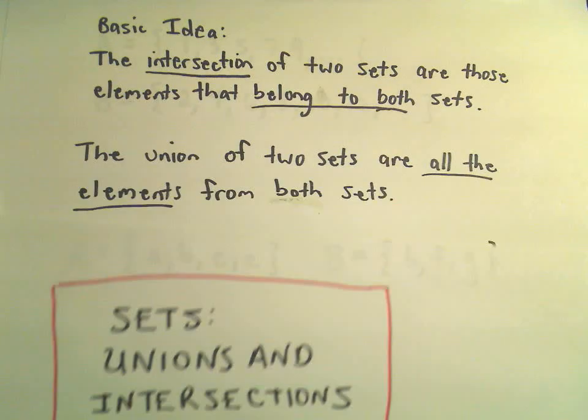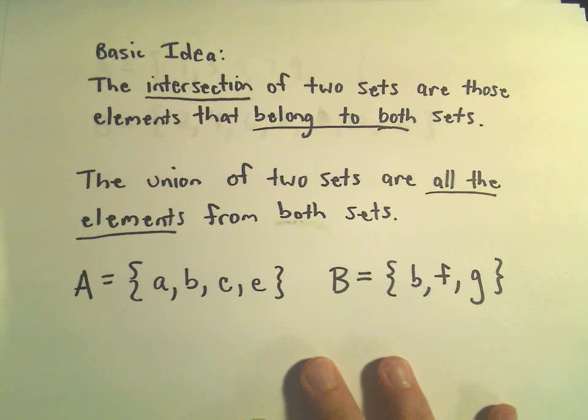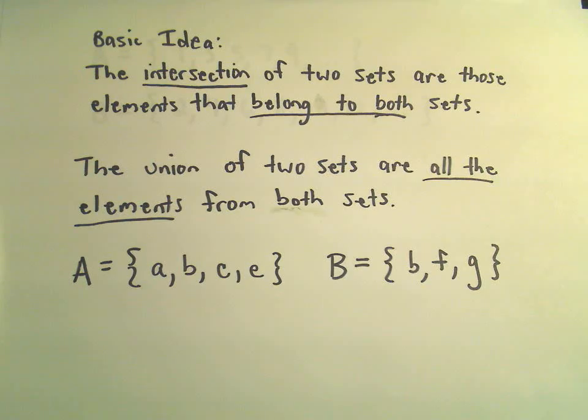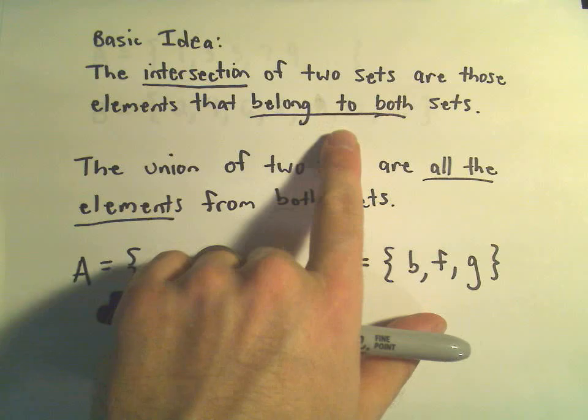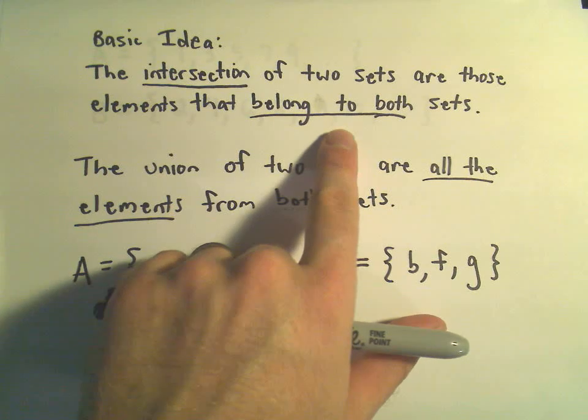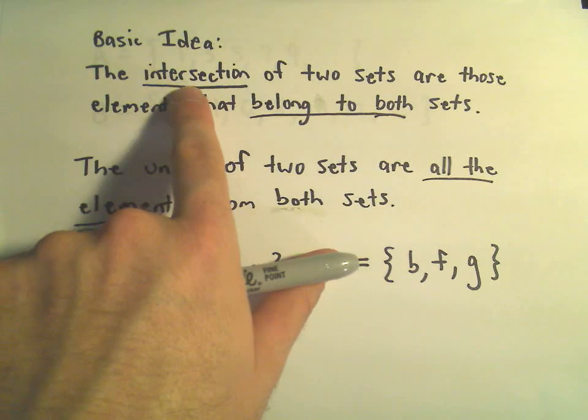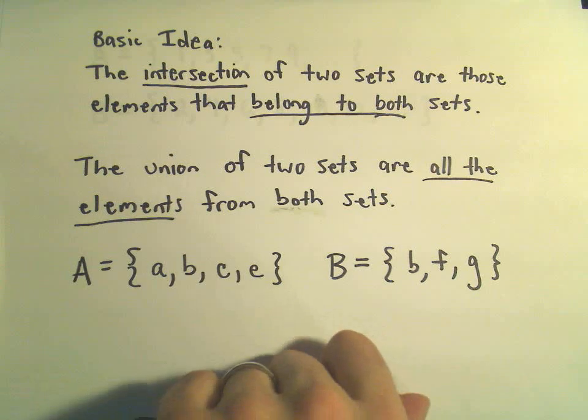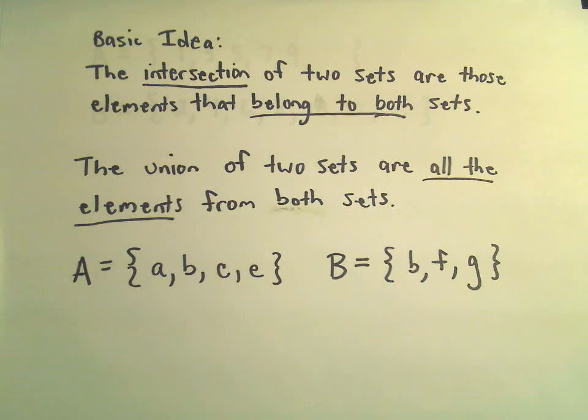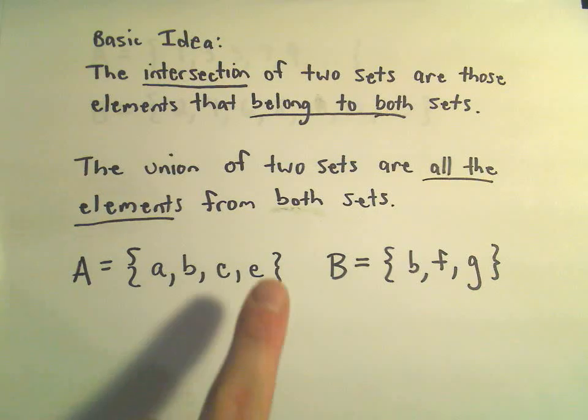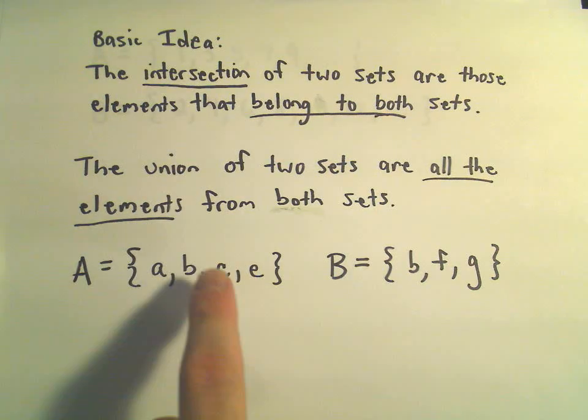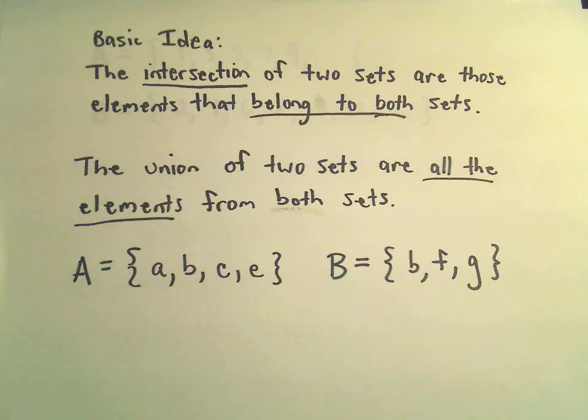So, basic idea, the intersection of two sets are those elements that belong to both sets. I kind of imagine the intersection of a road, it's that place in the road that's common to both streets. It's where they overlap. The union of two sets, we just simply list everything from both sets.